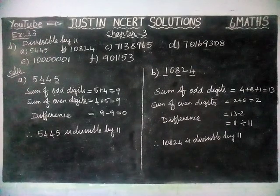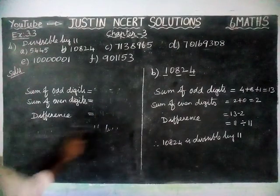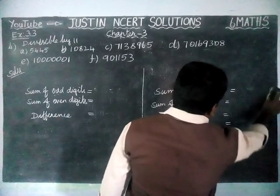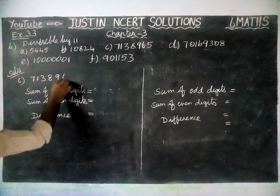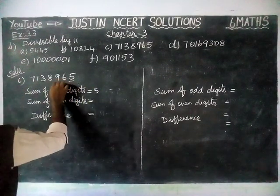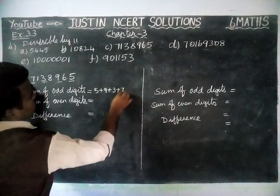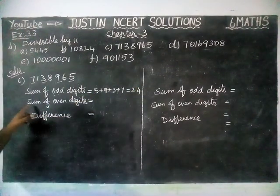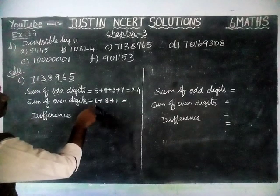Next, we are going to see Option C. The sum of odd digits — we are going to add 5, 9, 3, 7 as the odd-position digits. 5 plus 9 plus 3 plus 7 is equal to 24. Next, the sum of even digits: 6 plus 8 plus 8 plus 1 is equal to 23.